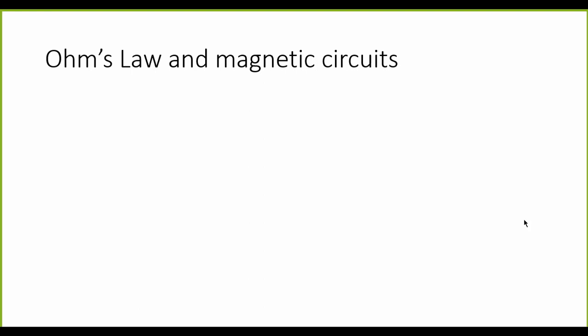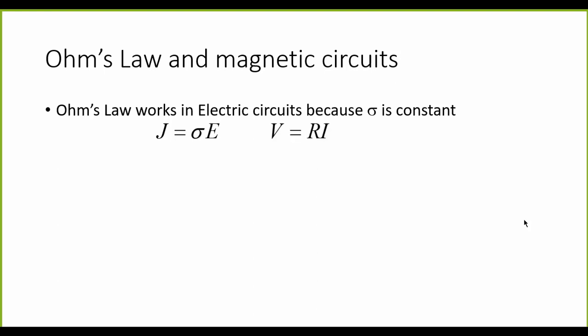Ohm's Law works in electric circuits because sigma is constant. This very simple representation of Ohm's Law says that the current density J is proportional to the electric field E, given the conductivity of the material. In an electric circuit we can write at the macro level V equals I times R, which is the one we are familiar with.